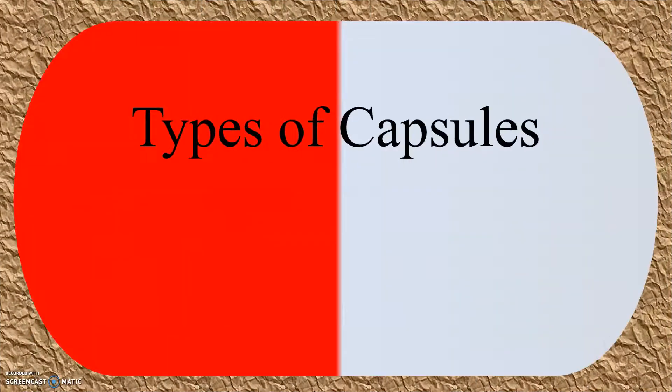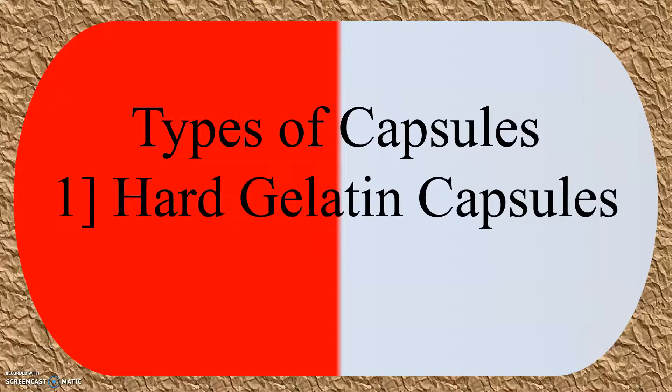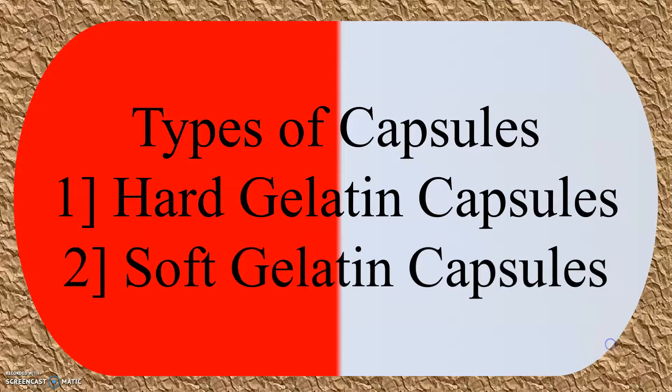Now let us see the types of capsules. There are two types: first is the hard gelatin capsules, and second is the soft gelatin capsules.